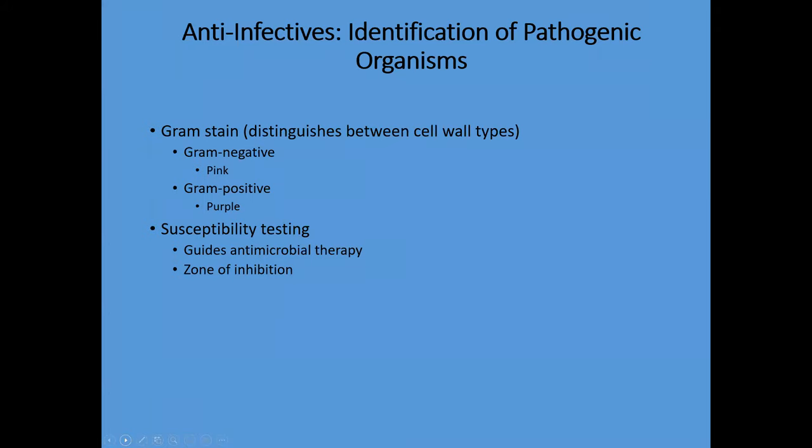Anti-infective agents: as discussed in other modules, if a patient develops septic shock, in addition to treating blood pressure you want to start the right antibiotic to control the infection and reverse sepsis. Gram stain distinguishes between cell wall types — gram negative is pink, gram positive is purple. Susceptibility testing guides antimicrobial therapy; the zone of inhibition determines the extent to which the antibiotic inhibits growth and kills the bacteria.